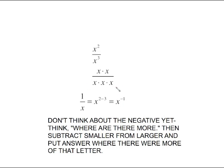But the other way to think about this is with the exponent law. The exponent law says keep the base and subtract from the top down. 2 minus 3 actually gives me the negative exponent, negative 1. I don't want to think about the negative exponent just yet. I want us to deal with problems in this fashion. Don't think about the negative yet. I'd rather have you think right now, where are there more? Then subtract the smaller exponent from the larger exponent and put the answer where there were more of that letter. Sounds complicated, but when you see it in action, you'll understand.